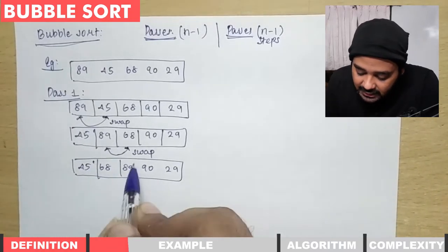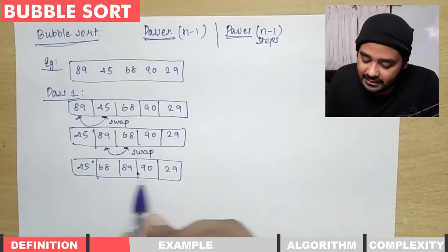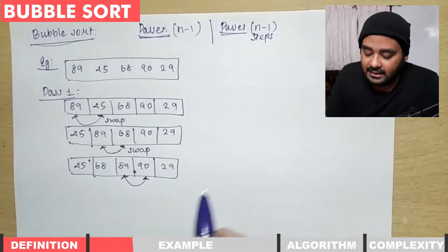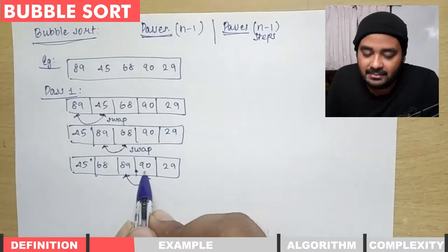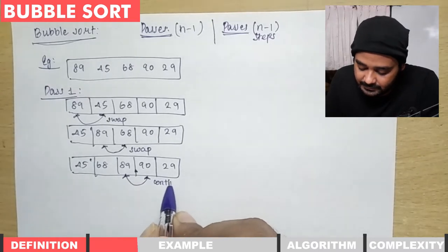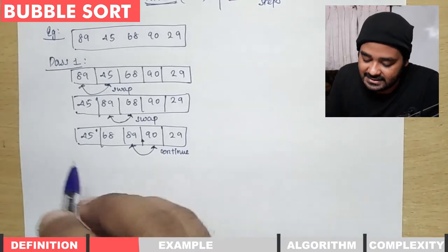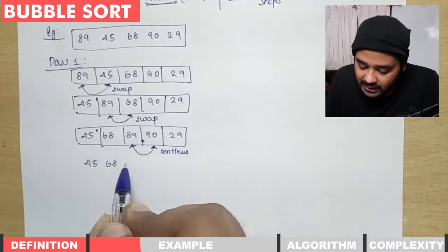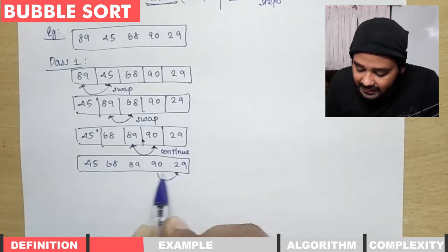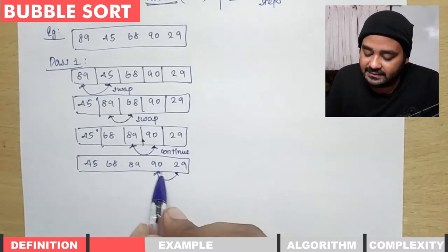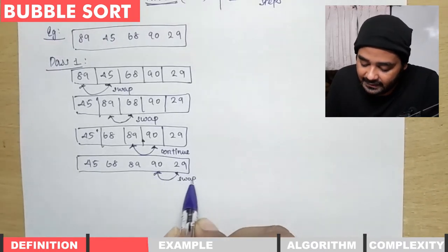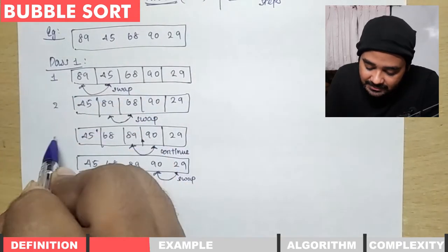Next we compare 89 with 90. Here the adjacent element 90 is greater, so there is no need to swap — we simply continue. Then we compare 90 and 29. They are not in order, so we swap. That completes step one, two, three, and four of pass one.